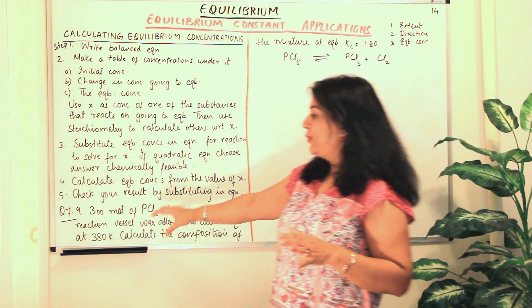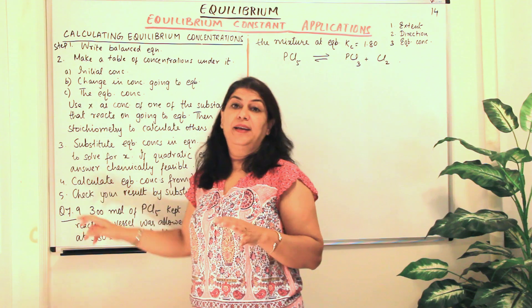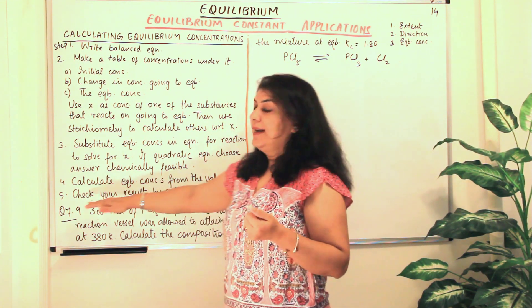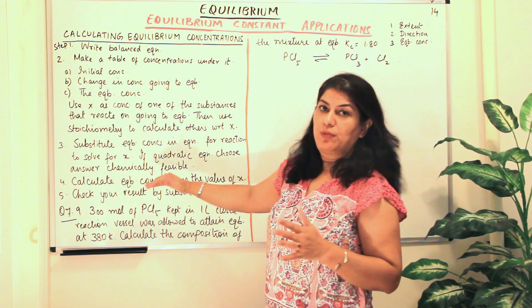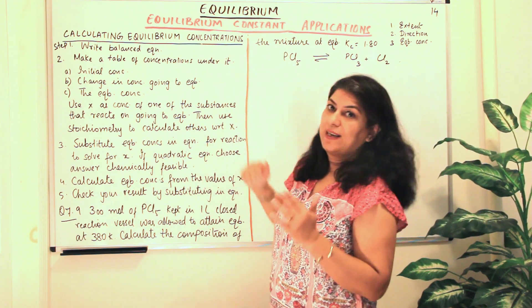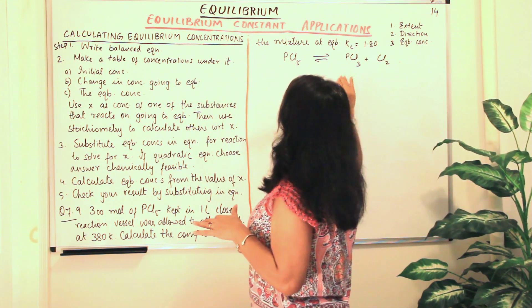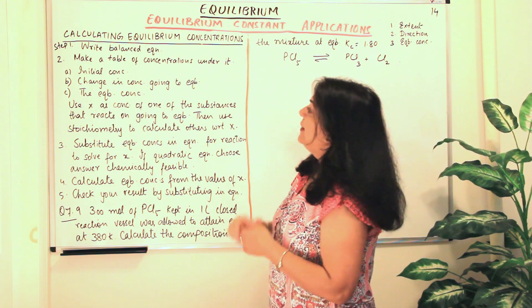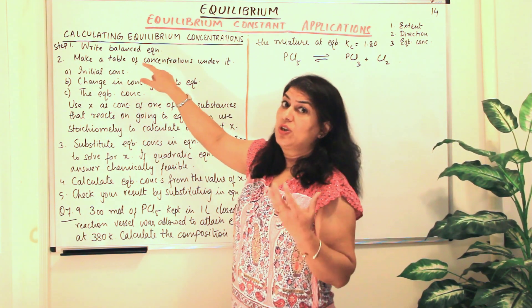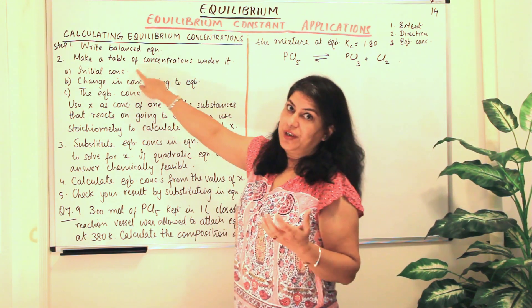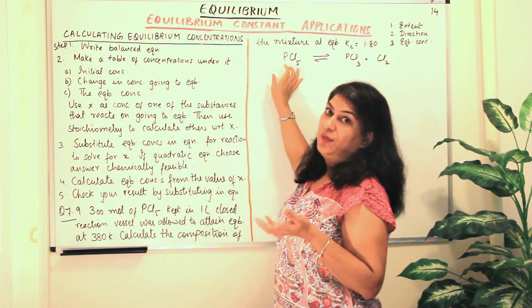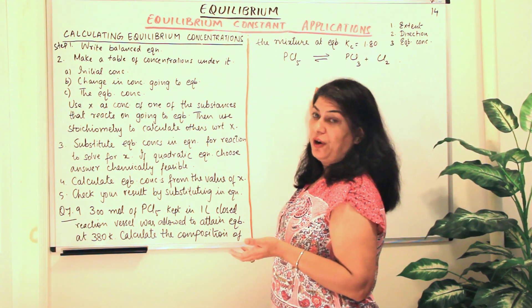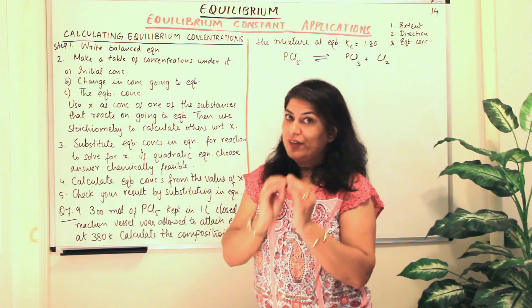I have taken an example here — question 7.9 from your textbook, a solved example, and according to this I have written the equation. Let me first tell you the steps. After writing down the concentrations of the different reactants and products under the equation, we want to write the initial concentrations — what did we start with? Did we start with the concentration of the reactant or the product? So what were the initial concentrations? We write that first.